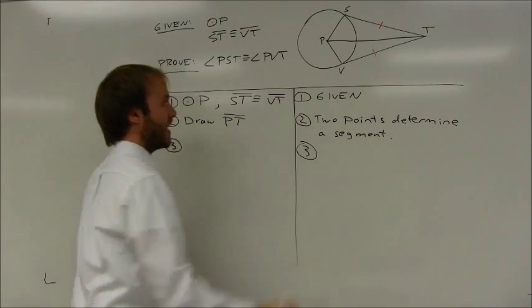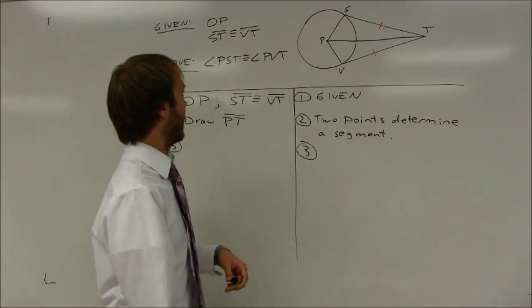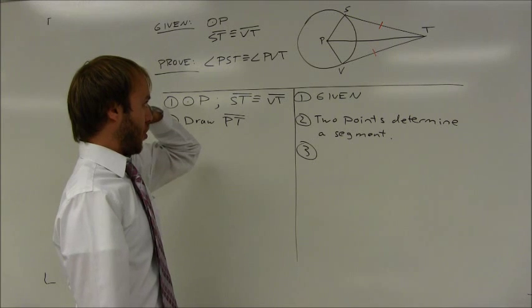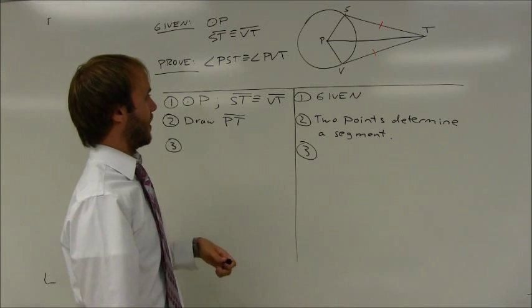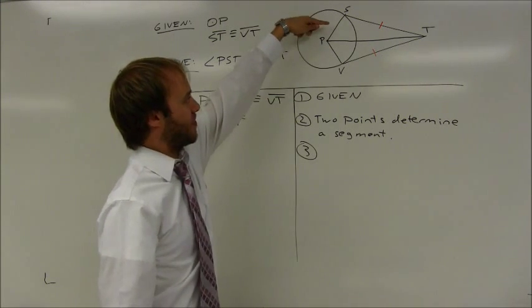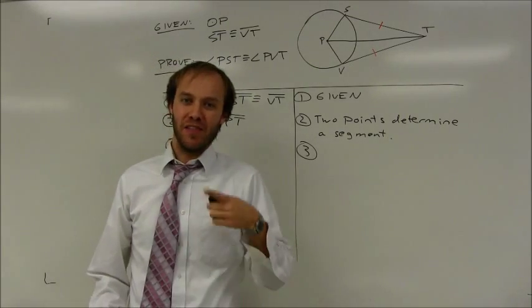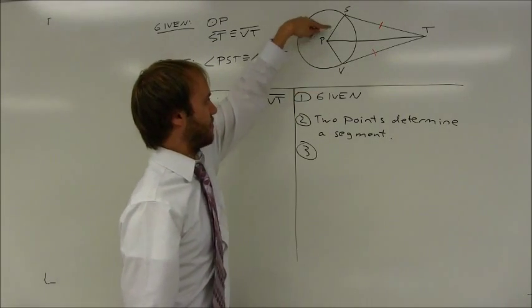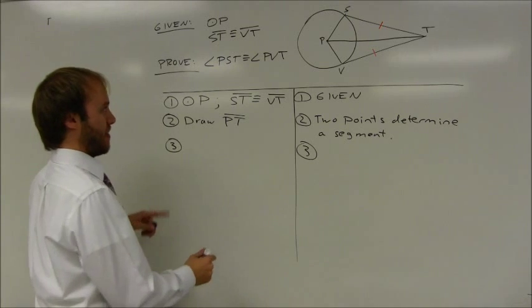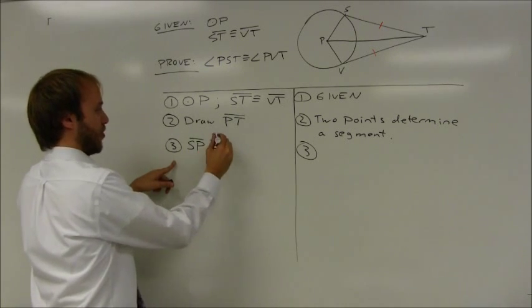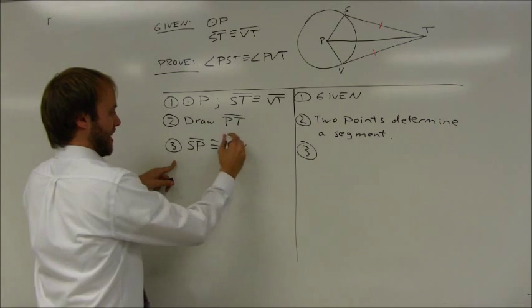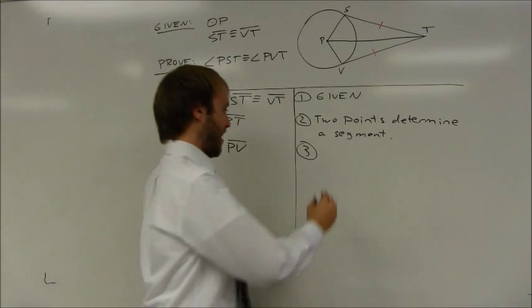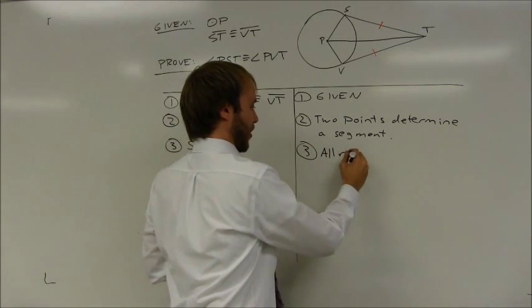Now I need to prove these triangles congruent. Right now I don't have a lot of information, but I do have the circle information. And I know that if that's the center of the circle, SP and PV are radii of a circle. So I'm going to state that SP is congruent to PV because all radii of a circle are congruent.